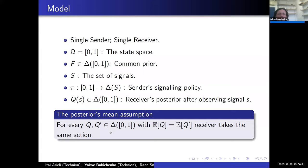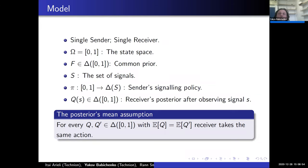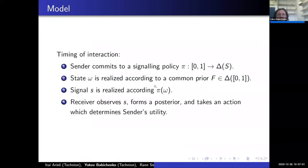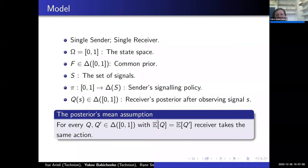The posterior mean assumption is: consider two different posteriors Q and Q prime. If the expectation of Q equals the expectation of Q prime, then the assumption tells us the receiver will take the same action — his best-reply action will be the same, and therefore his effect on the sender's utility will be the same. This is the posterior mean assumption. I will give some interpretation for where it naturally arises.